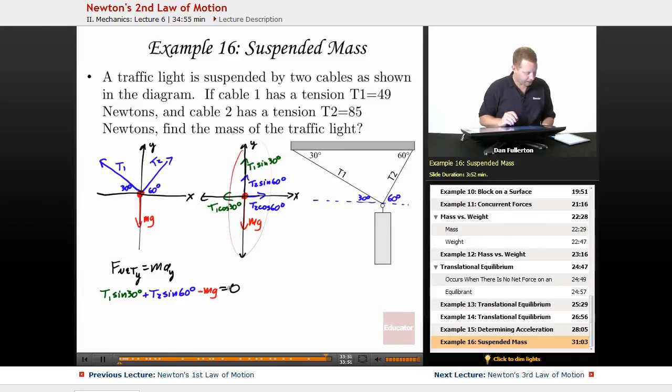Well, when I do that, I can then say since T1 is 49, that 49 sine 30 degrees plus T2 is 85 newtons, 85 sine 60 degrees must be equal to mg or 49 sine 30, that's about 24.5 plus 85 sine 60, that's about 73.6 must be equal to mg, 9.8 times m. Divide both sides by 9.8 and I come up with a mass of about 10 kilograms.